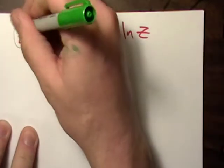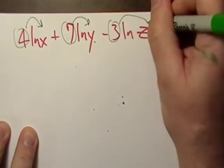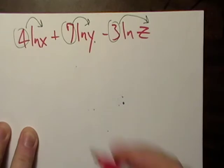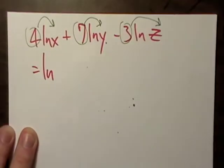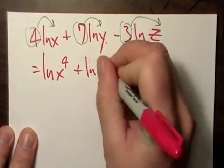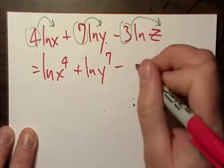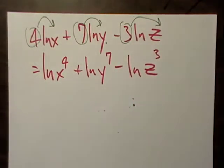I will take three power rules to go, right? Three of them. So that's equal to natural log x to the fourth plus natural log of y to the seven minus natural log of z to the third.